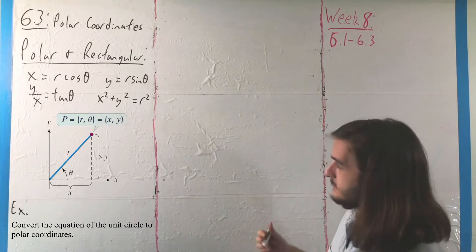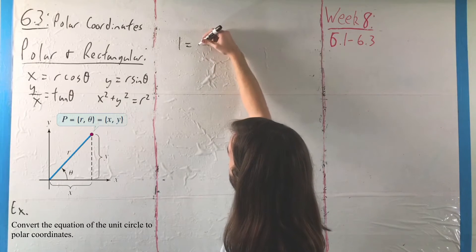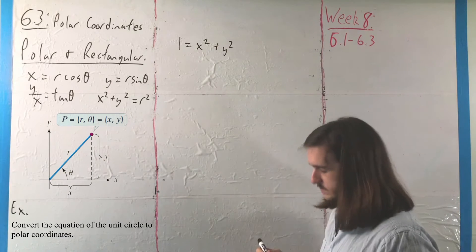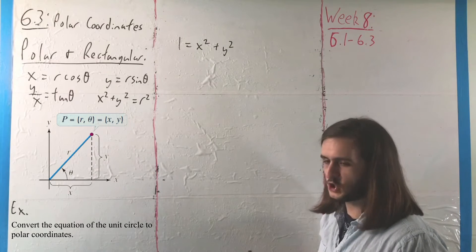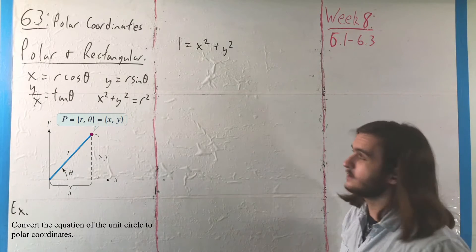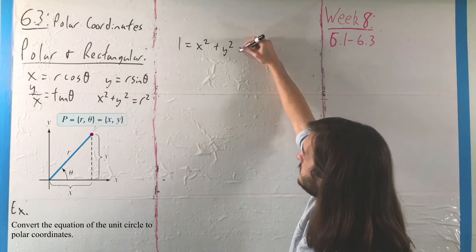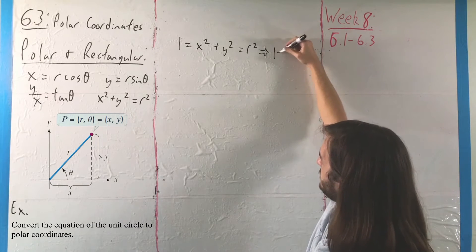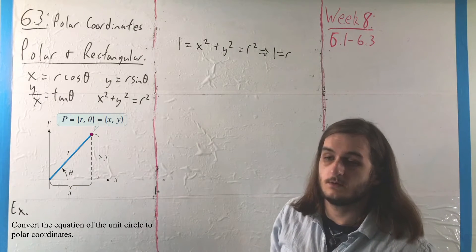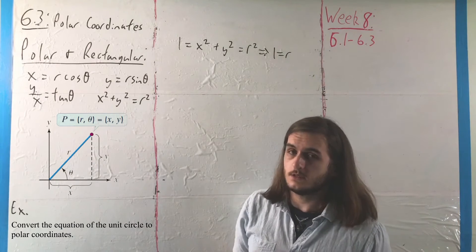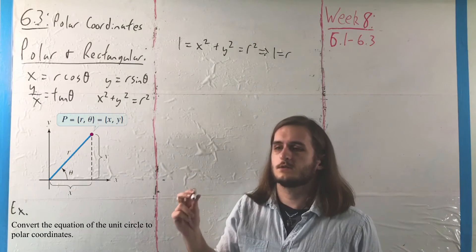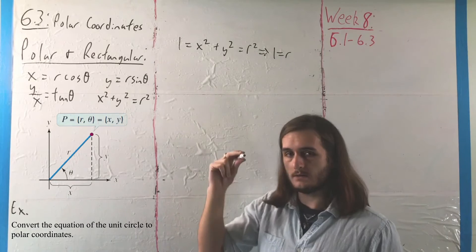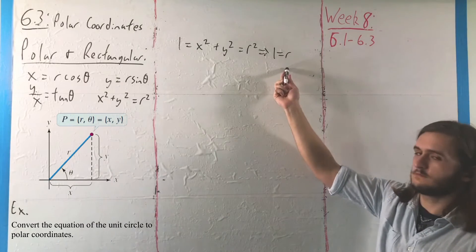So here, if we have 1 equals x squared plus y squared, well, there's a short way to get to our answer, but I'll go through the long way as well. But to be fair, x squared plus y squared equals R squared, which means we have the equation R equals 1, which should make sense because it's the unit circle. It's the set of points of radial distance from the origin 1, so R equals 1.